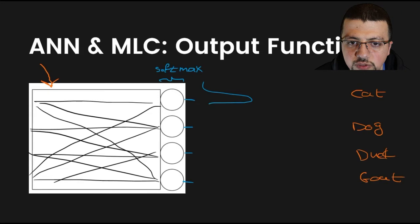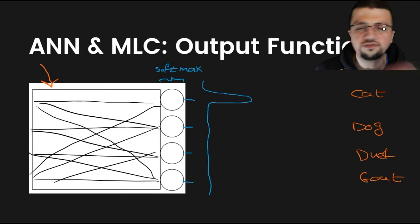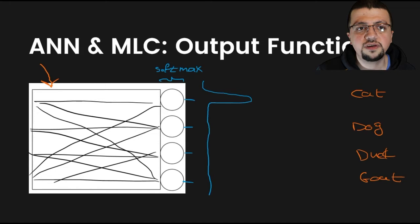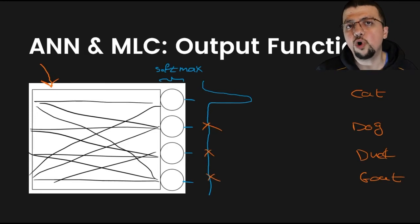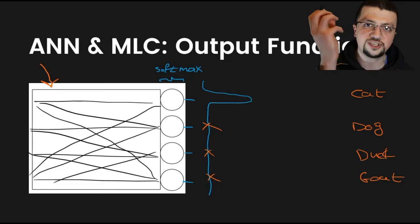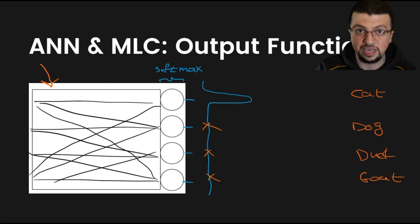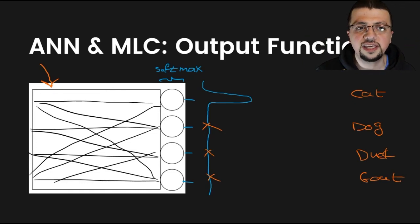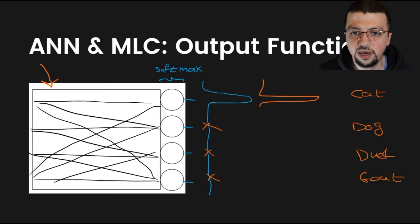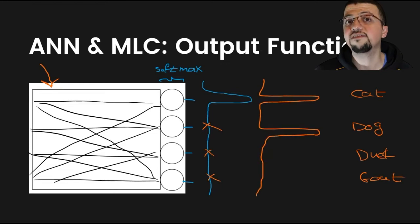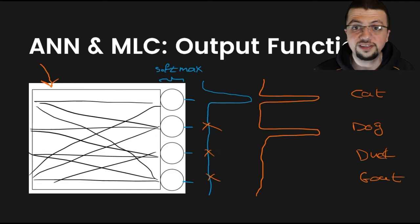If you plot the distribution of outputs across all images of class cat, you'd like to see a very high value for the cat output and very low values for all other classes. You can't have a scenario where cat is high and another class is also high, because the sum of all softmax outputs must equal one. If one element goes high, everything else gets crushed — you simply can't have two simultaneously high outputs with softmax.